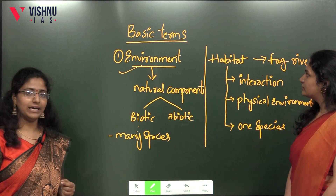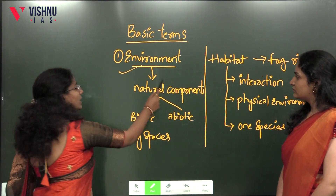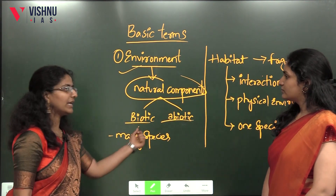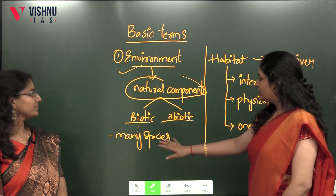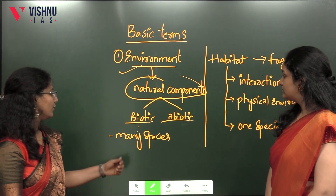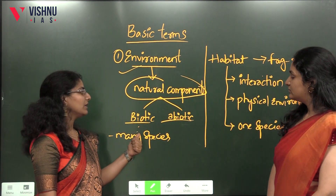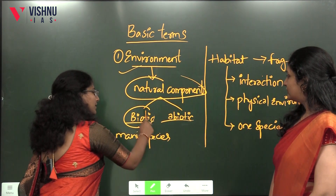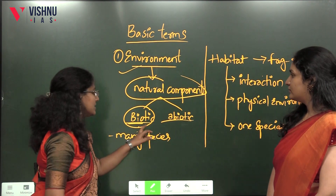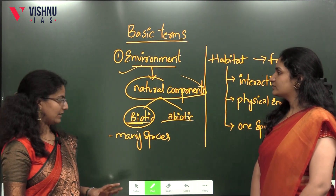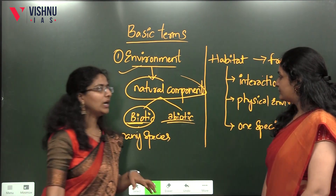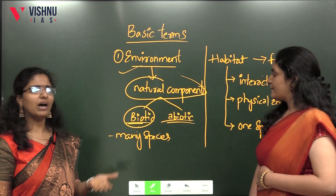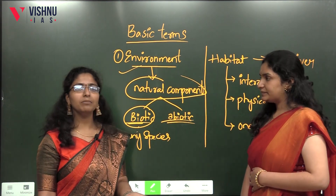So, what is an environment? Environment is nothing but a natural component — it is the interaction between biotic and abiotic components. Biotic means living components of the Earth, such as flora and fauna. Abiotic means non-living components, such as climate, soil, and weather.